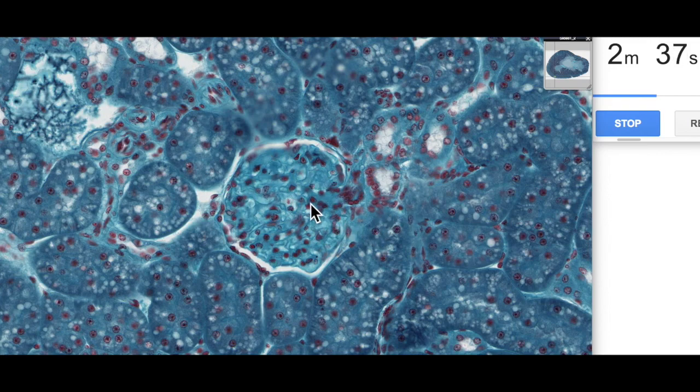The renal corpuscle is made up of two components. It's made up of a capillary tuft known as the glomerulus, which are these loops here which you can see. The endothelial cells have their nuclei here. These are fenestrated capillaries, and that's part of the glomerular filtration barrier.